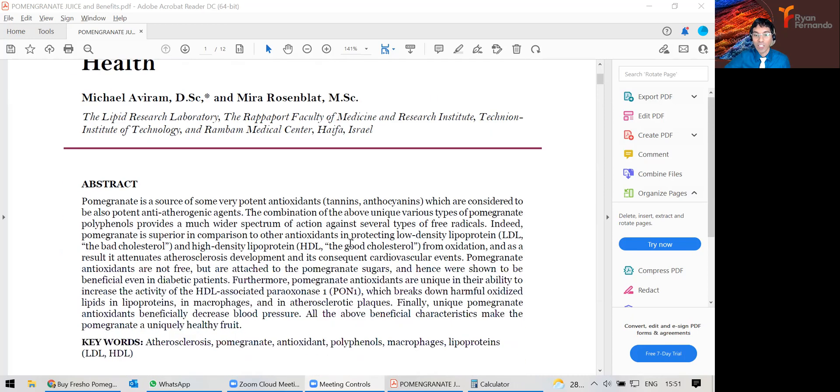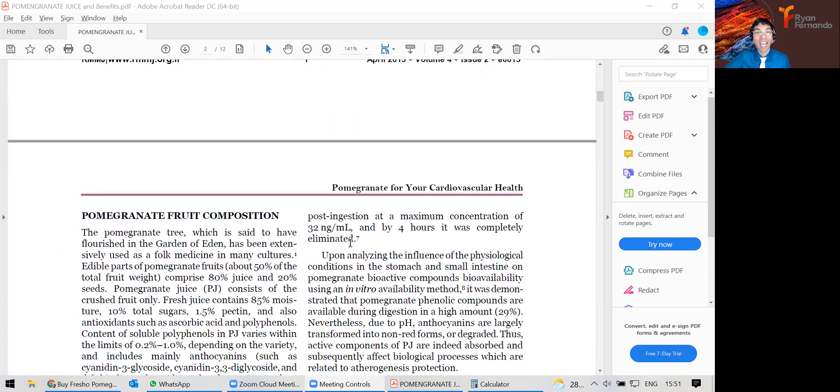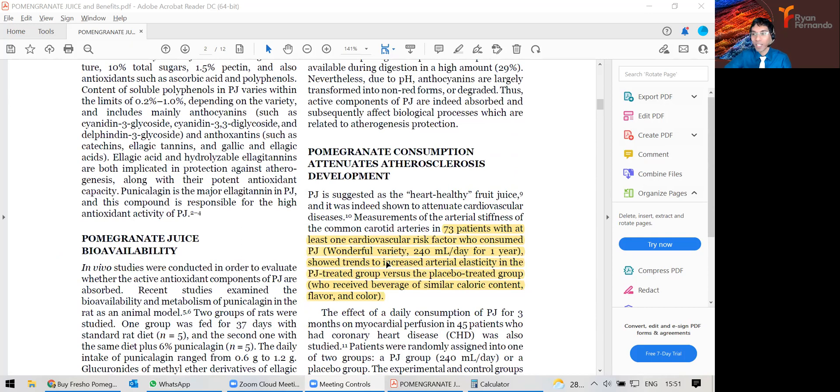I digested it today. Look at this: 73 patients with at least one cardiovascular risk consumed pomegranate juice, 240 ml per day for one year, and they showed trends to increase arterial elasticity.